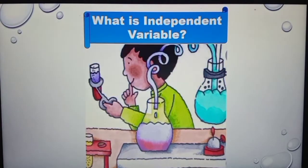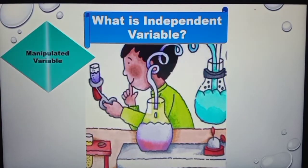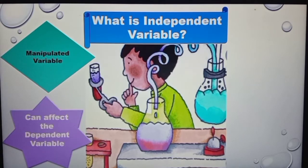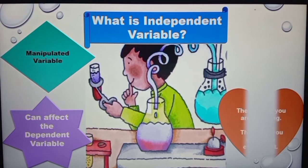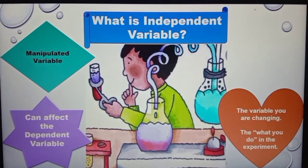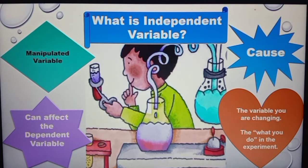The first one is the independent variable. It is also known as the manipulated variable. It can affect the dependent variable. The independent variable is the one that is changed in an experiment — it is what you do in the experiment. For a fair test, it is usually wise to have only one independent variable at a time.